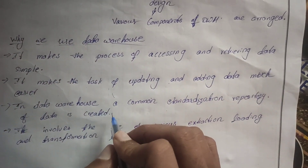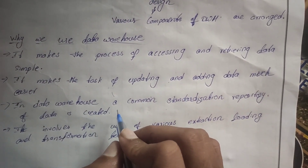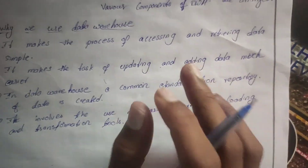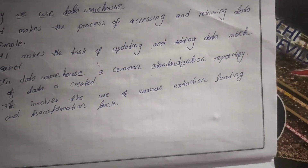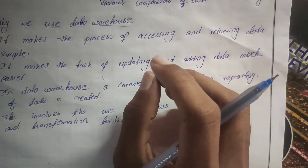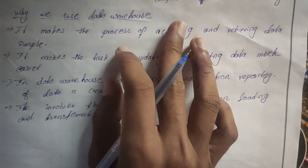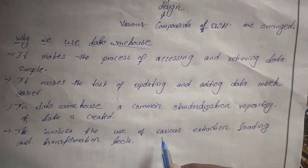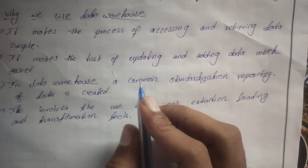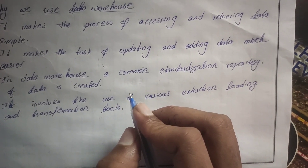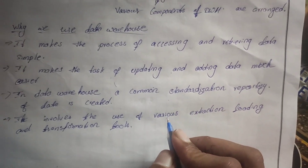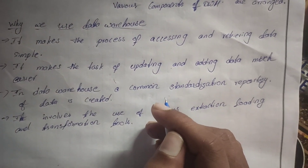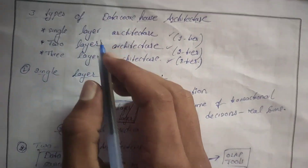In the data warehouse, the data will be stored in a standardized form of repository. A repository means a place where data or project data will be stored. It also involves various extraction, loading, processing, and transformation tools — ETL tools like Hive, etc.